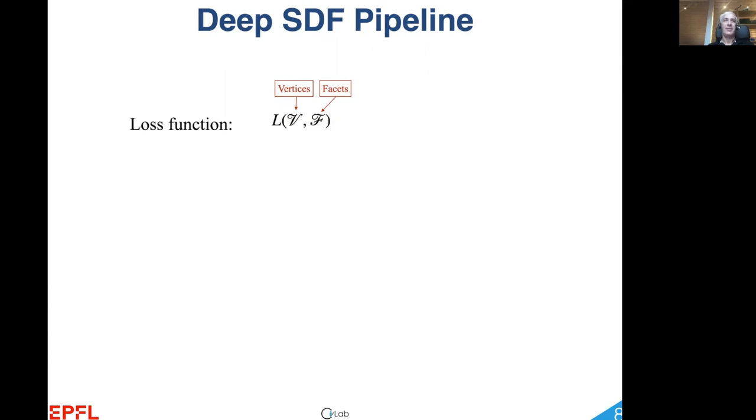To see where the problem lies, let us consider a loss function L that depends on the vertices and facets of a 3D triangulation, and let us assume that the surface it represents is parameterized implicitly by a network F theta like the one we presented in the previous slide.